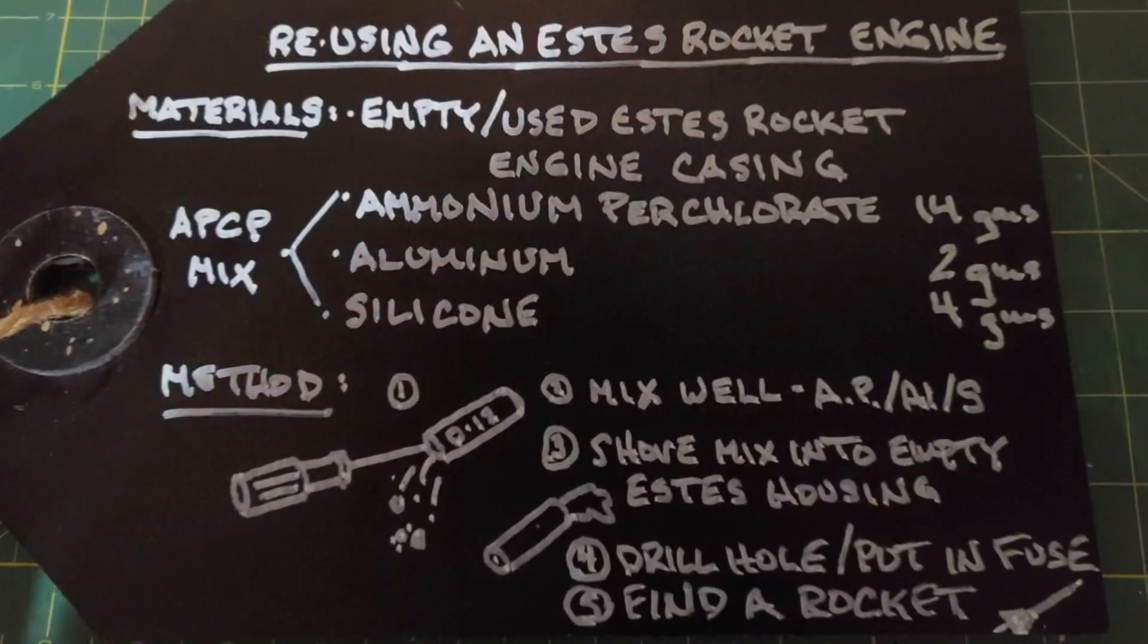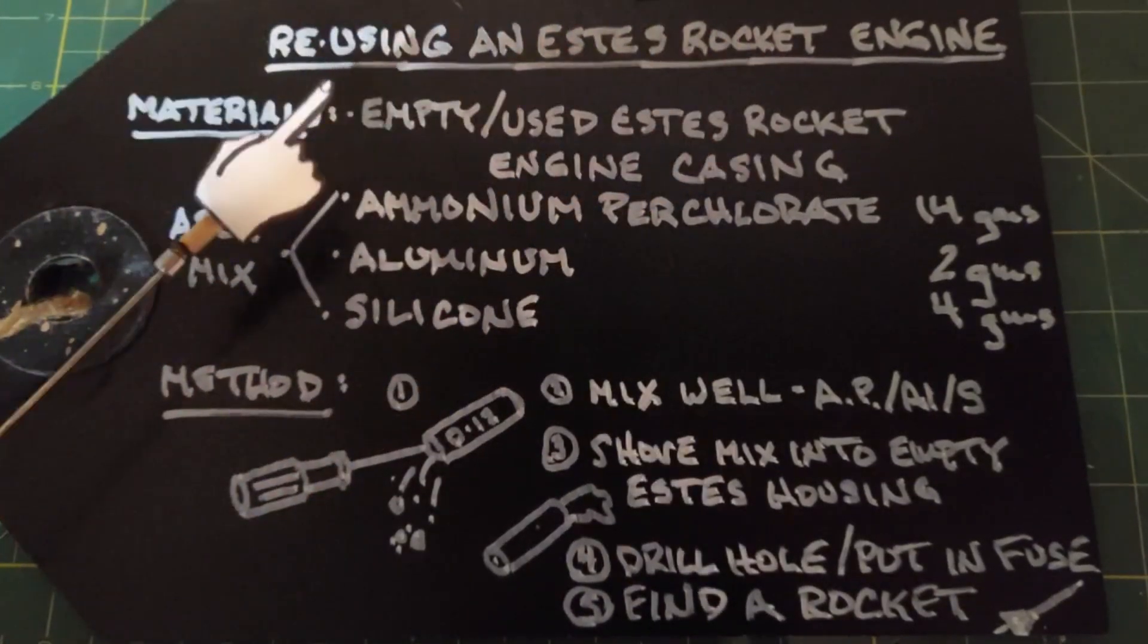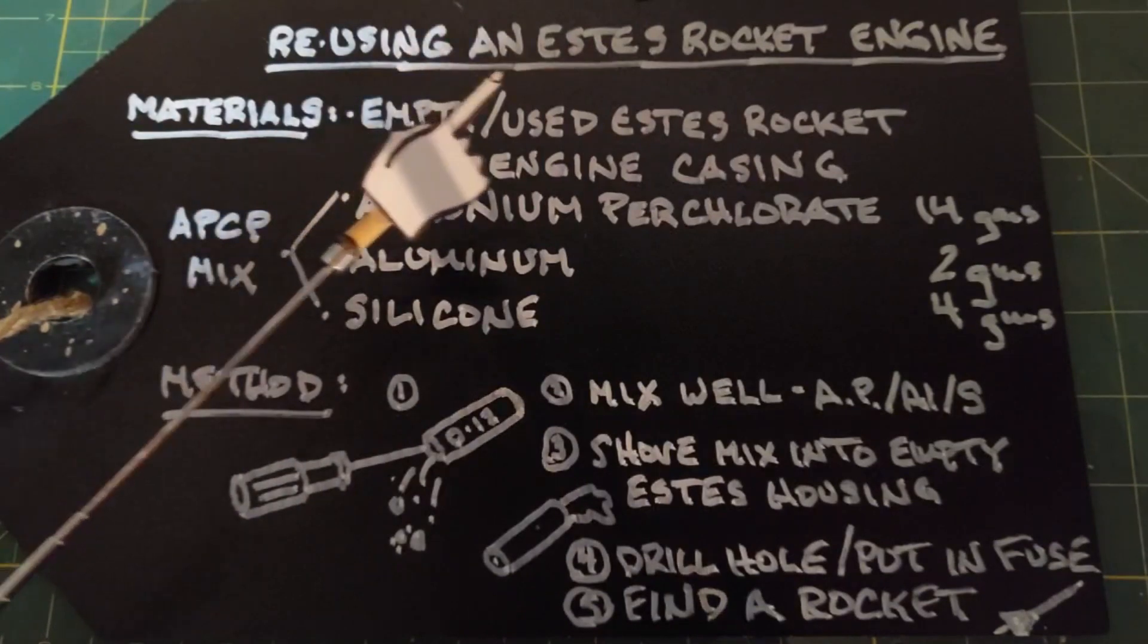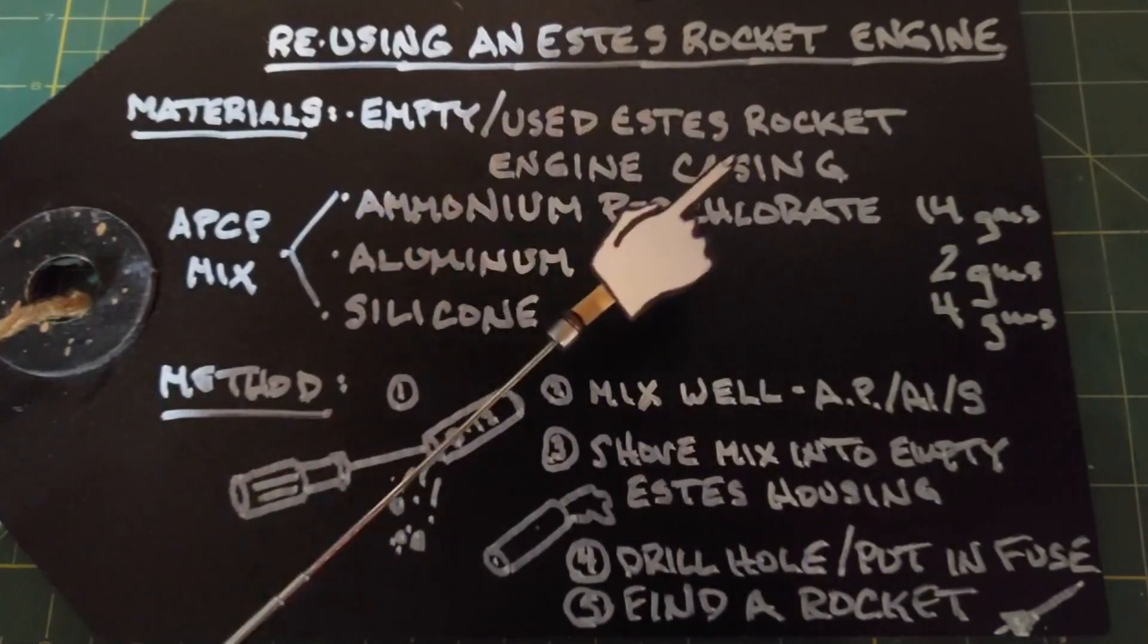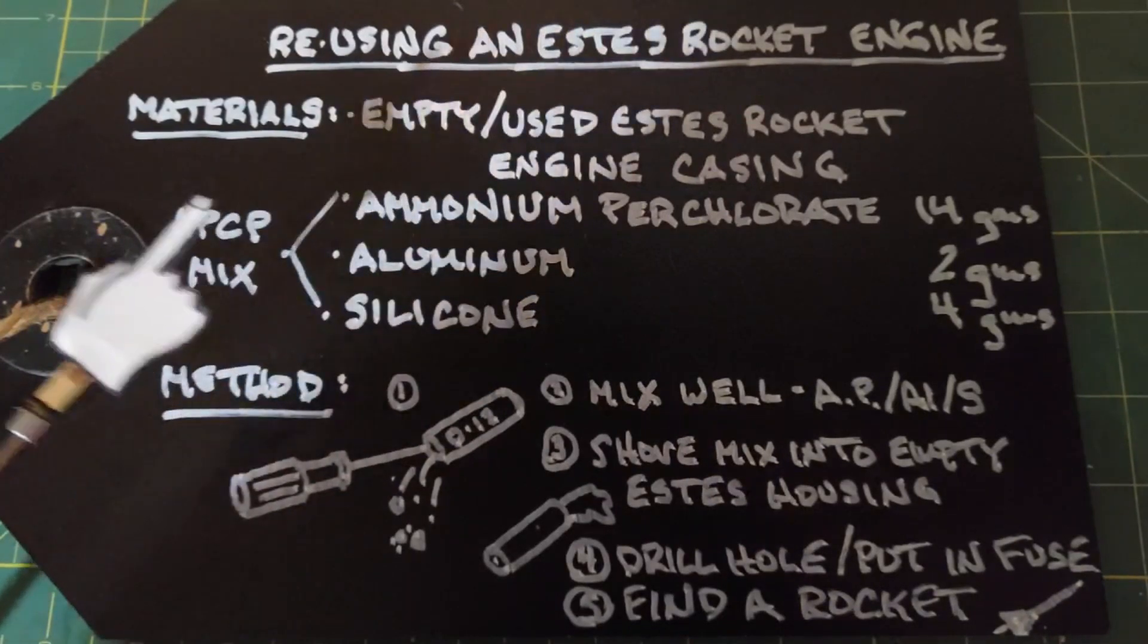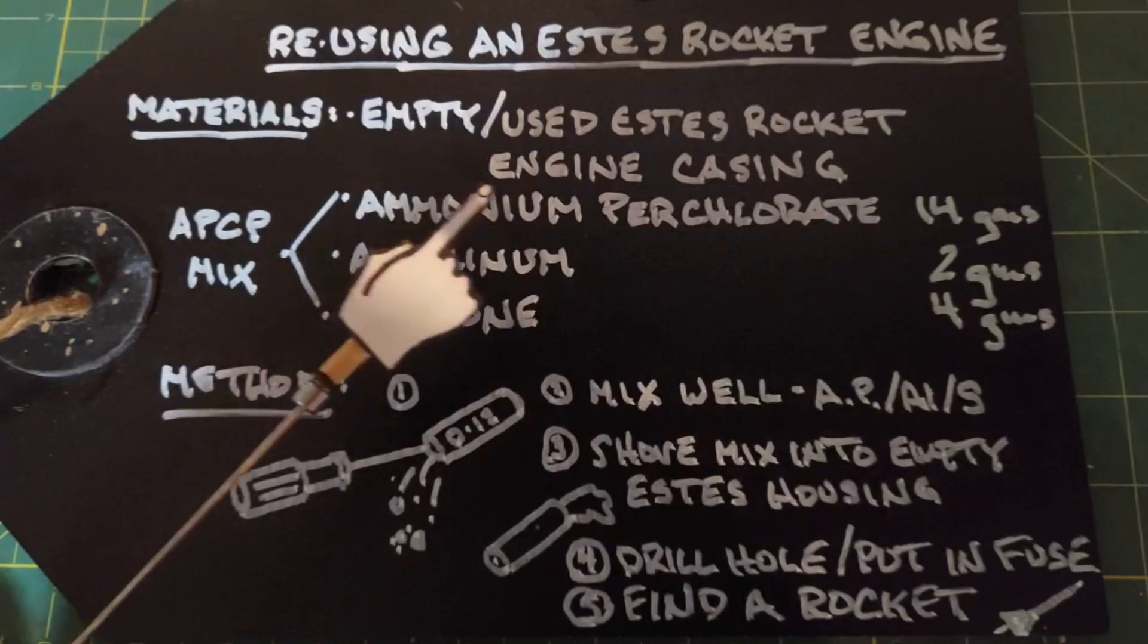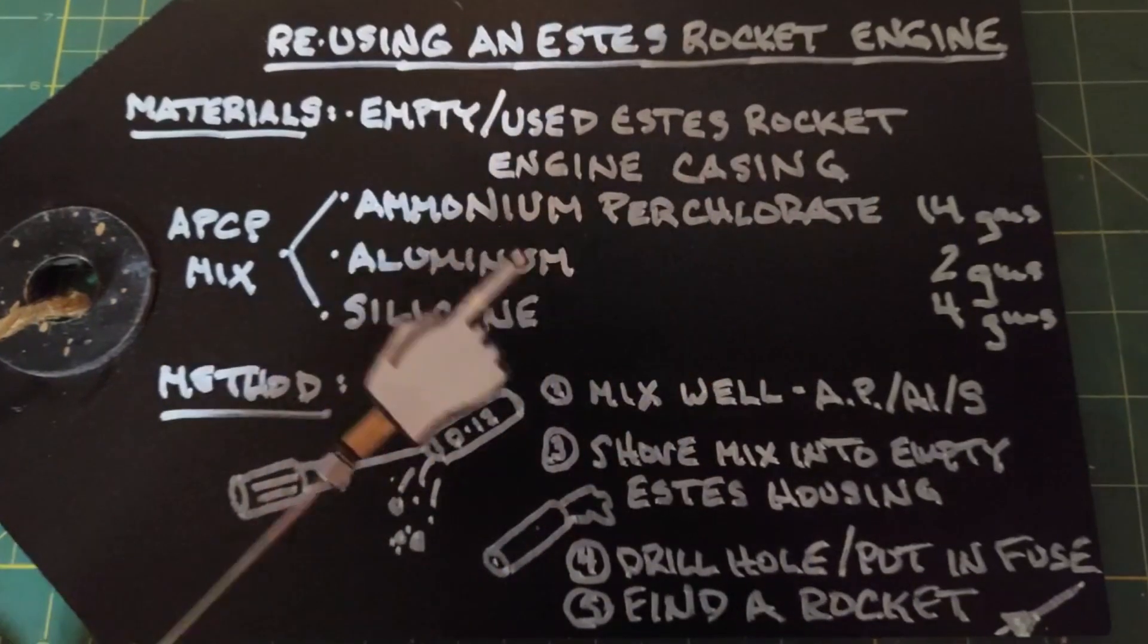In this video we are going to look at reusing an Estes rocket engine. For our materials we obviously need an empty, used, burned out Estes rocket engine casing. For the rocket fuel itself I'm going to use the APCP mix I did in a previous video and it's going to include ammonium perchlorate 14 grams, aluminum 2 grams, and silicone 4 grams.